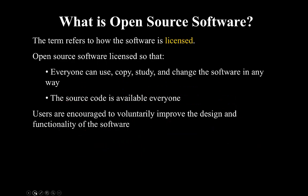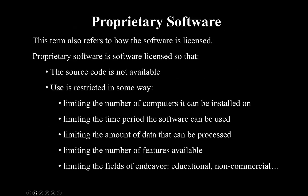So what is open source software? The term refers to how the software is licensed. Open source software is licensed so that everyone can use, copy, study, and change the software in any way, and the source code is available. Users are encouraged to voluntarily improve the design and functionality of the software.